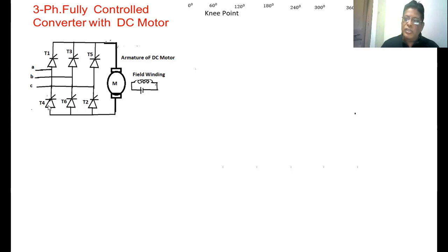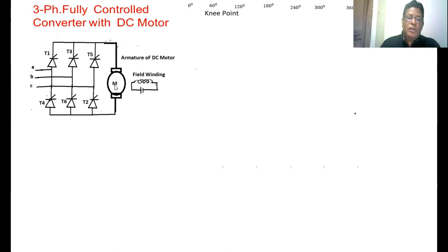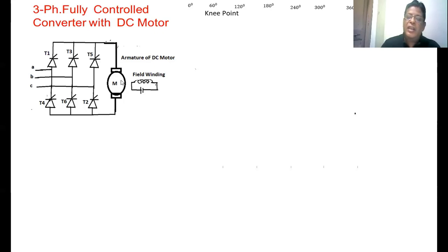If we take T4, it is in the negative group of SCRs. It is forward biased only when the A phase is more negative, similarly for T3, T5 and T2, T4. Here we have taken the load as the armature of a DC motor. The field is excited with a separate DC source. The armature consists of resistance RA, inductance LA, and back EMF E. RA is the armature resistance, LA is the inductance of the armature winding, and E is the back EMF of the DC motor.